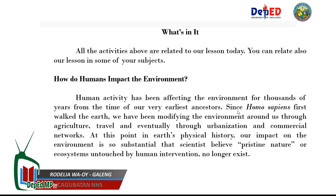How do humans impact the environment? Human activity has been affecting the environment for thousands of years, from the time of our very earliest ancestors. Since Homo sapiens first walked the Earth, we have been modifying the environment around us through agriculture, travel, and eventually through urbanization and commercial networks. At this point in Earth's physical history, our impact on the environment is so substantial that scientists believe pristine nature or ecosystems untouched by human intervention no longer exist.